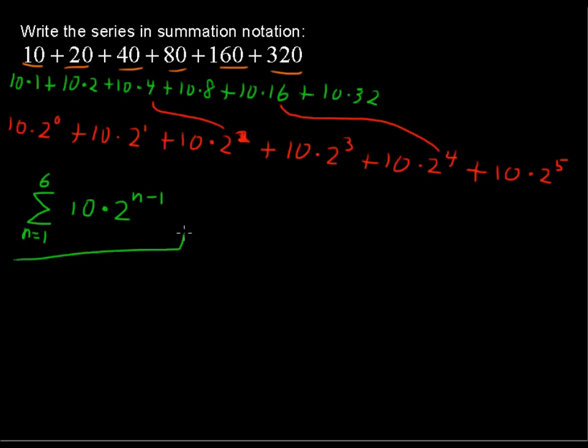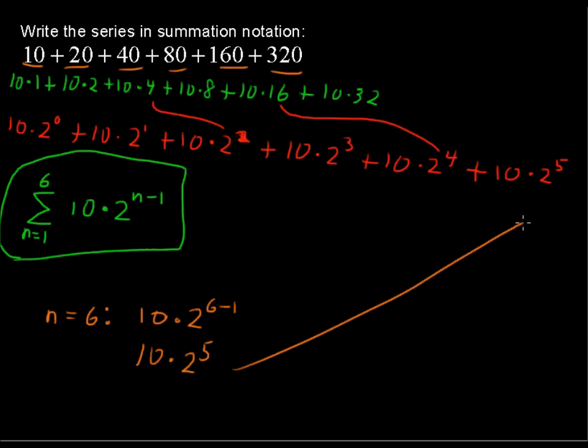Let's just check that out. I want to circle this because I feel pretty good about that, but let's check it out. If I plugged in a 6 here, when n equals 6, I would have 10 times 2 to the 6 minus 1, or that's 10 times 2 to the 5th. And yeah, 2 to the 5th is what we're looking for for our last term. That looks pretty good then.